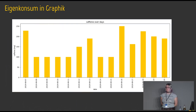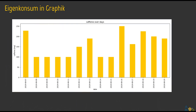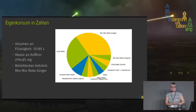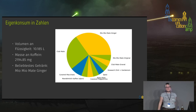While preparing for this talk, I looked at my own caffeine consumption. On the bottom you see the date, and on the left side you see the amount of caffeine I was taking in. We can look at what this means later. I was consuming about 10 liters of caffeine-containing drinks, which is around 2000 milligrams of caffeine.